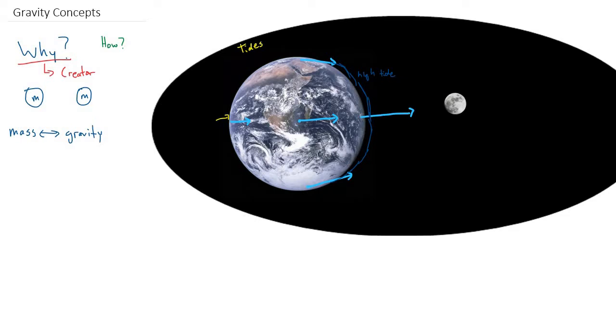If that was the case, we'd only have one high tide per day as your side of the Earth went past the Moon. But actually, we have two high tides per day. And the other high tide happens to be on the side that is away from the Moon. So we actually have another bulge in the ocean water on this side opposite the Moon.